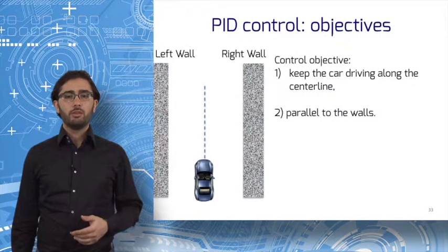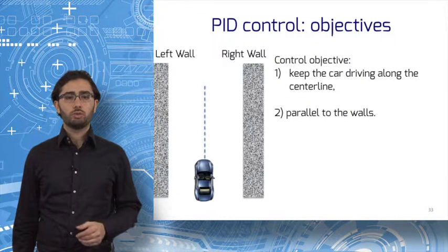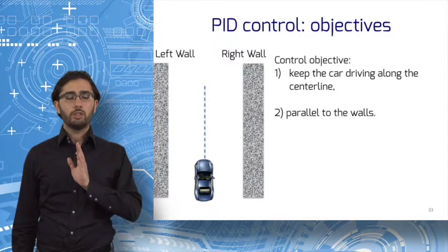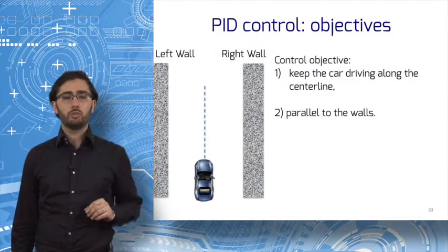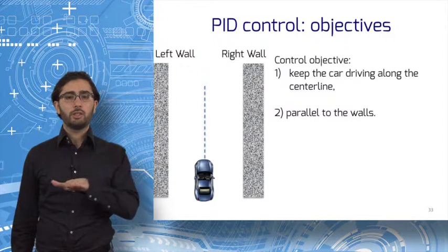Let's set up the scene. The car is driving down a hallway. There are two control goals. First, drive along the center line, shown in dashed blue. Second, stay parallel to the walls.